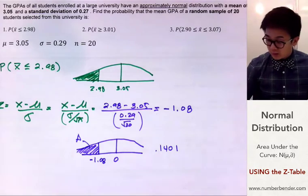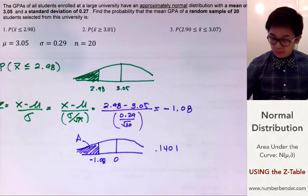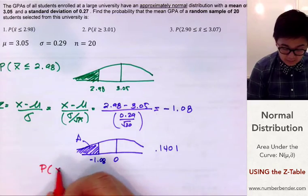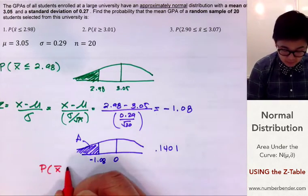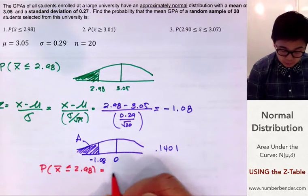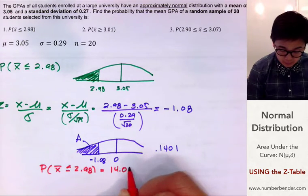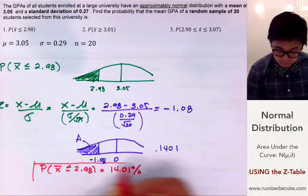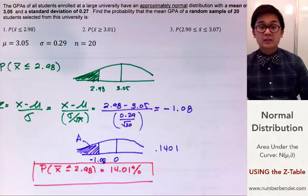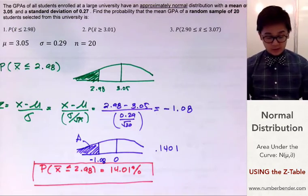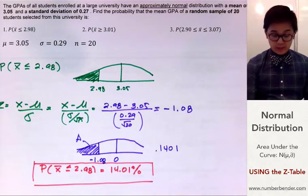To answer our question: the probability that the mean GPA is less than or equal to 2.98 is equal to 14.01%. This is how we use the Z-table to find the probability of a normal distribution.